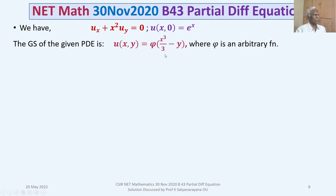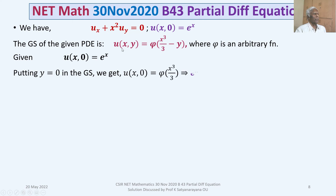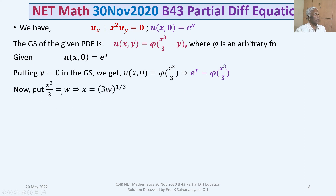To evaluate the arbitrary function, we use the condition u(x, 0) = e^x. Putting y = 0 in the general solution: u(x, 0) = φ(x³/3), so e^x = φ(x³/3). To determine φ completely, let w = x³/3, which gives x³ = 3w, so x = (3w)^(1/3).